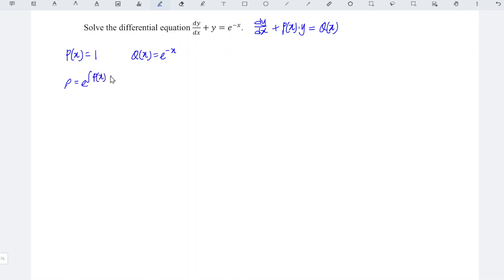So we have e to the integral of 1 dx. When we integrate 1 we obtain x. With this integrating factor we can rewrite the differential equation, so integrating factor times y equals integrating factor times q(x).